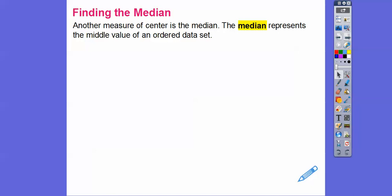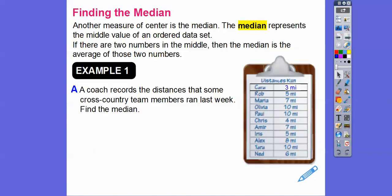So the median, it represents the middle value after you rearrange them from smallest to biggest. So if they're not rearranged, you always have to do that first. And sometimes there's two numbers in the middle, and if there's two numbers in the middle, then the median is the average of those two numbers.